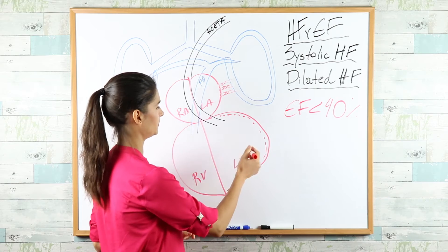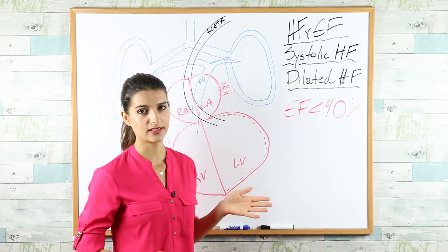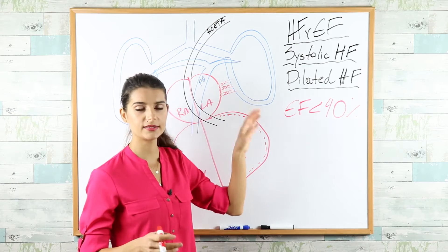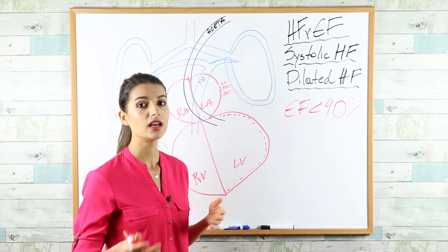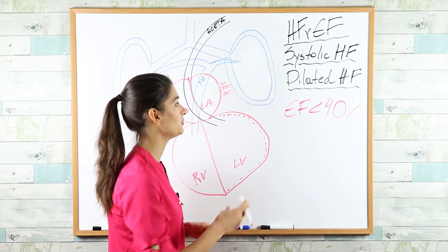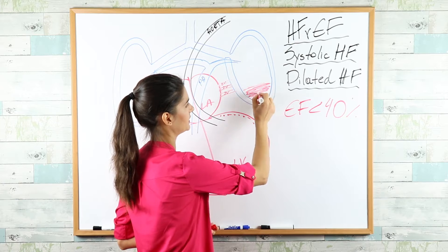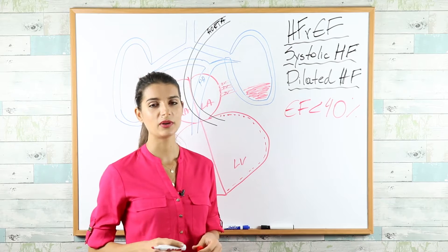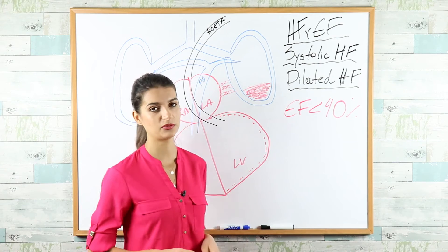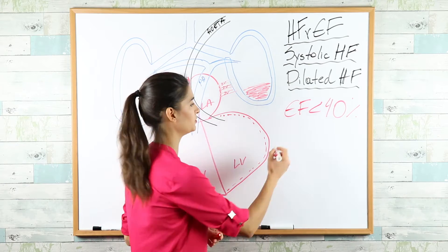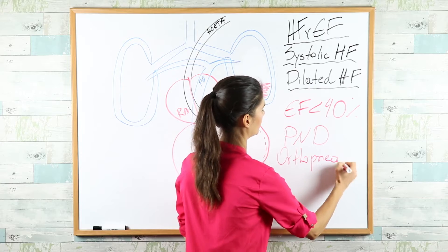Blood backs up to the left atrium, pulmonary veins, and pulmonary blood vessels. As it does, hydrostatic pressure in those vessels increases, and fluid seeps out into the lungs. This explains some of the most common symptoms in HFrEF — paroxysmal nocturnal dyspnea and orthopnea.